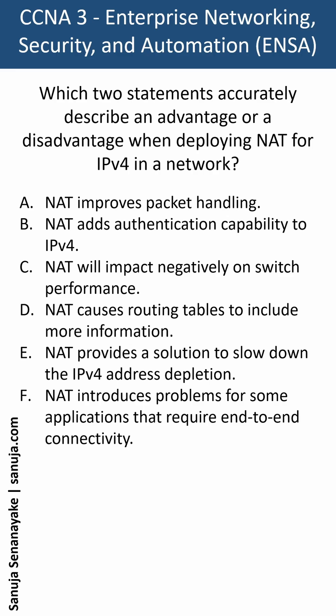This is a CCNA 3 exam question, but it is basically asking about the fundamentals of how IPv4 NAT works. We are looking for either two advantages, two disadvantages, or an advantage and a disadvantage. The answer to this question can be found within modules six to eight of your CCNA 3, and they are E and F.